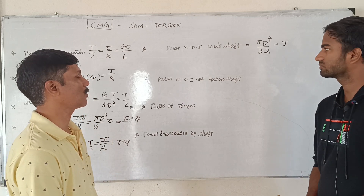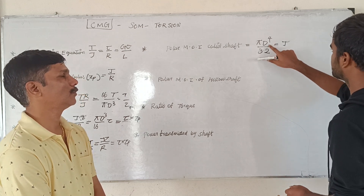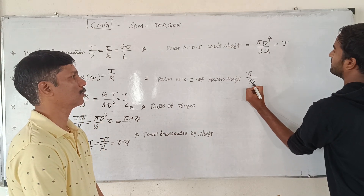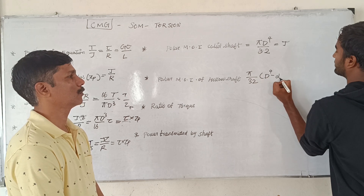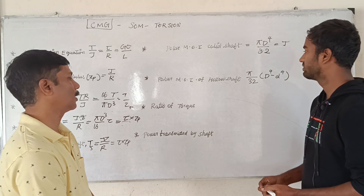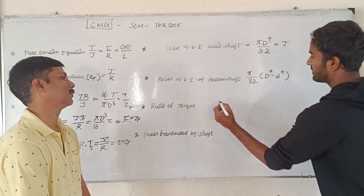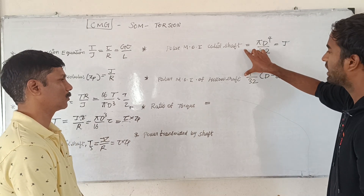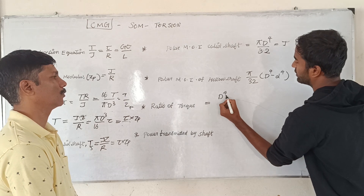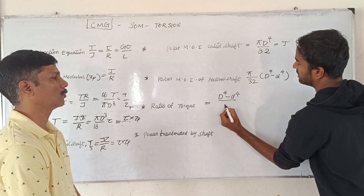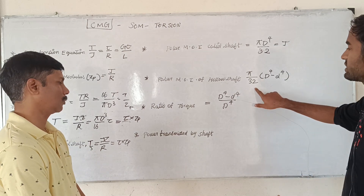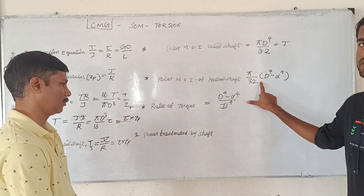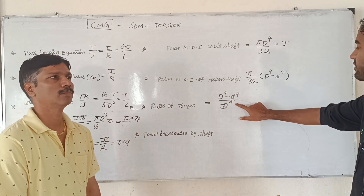For a hollow shaft, using the outer diameter D and inner diameter d, the polar moment of inertia is Pi by 32 times (D⁴ minus d⁴). The ratio of strength of hollow shaft to solid shaft uses (D⁴ minus d⁴) divided by D⁴.